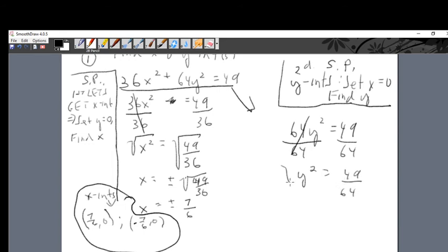Divide by 64 on the left, divide by 64 on the right. We get y² - we're looking for y, not y². So y² is equal to 49 over 64. We got to take the square root of y² because we want y. Take the square root of the right-hand side.